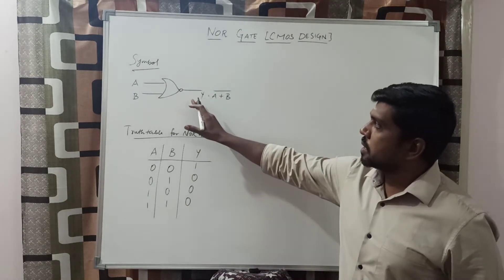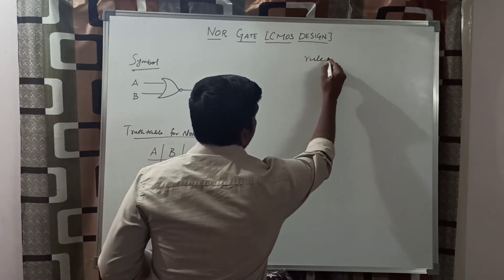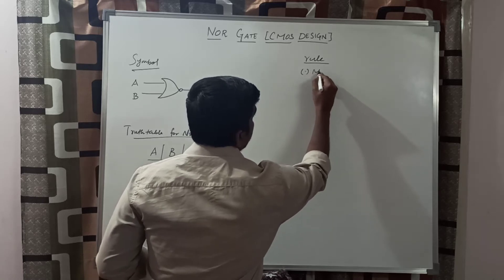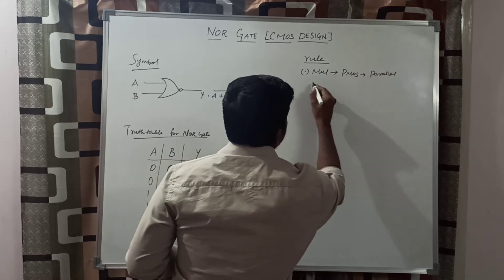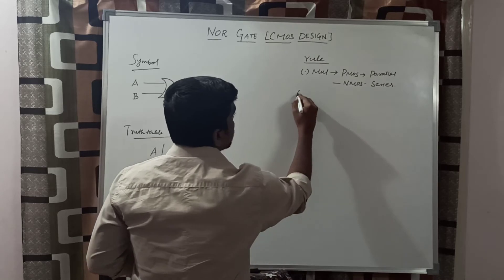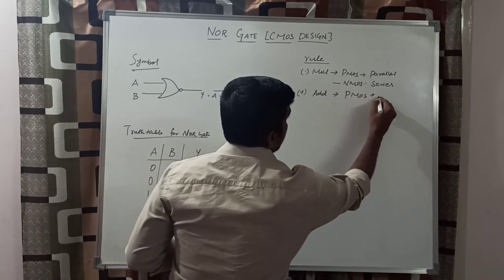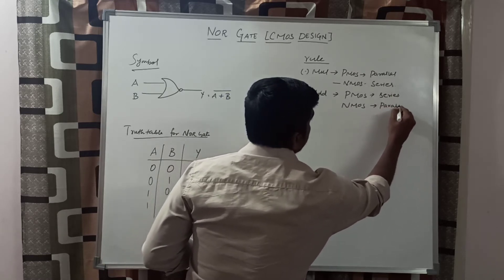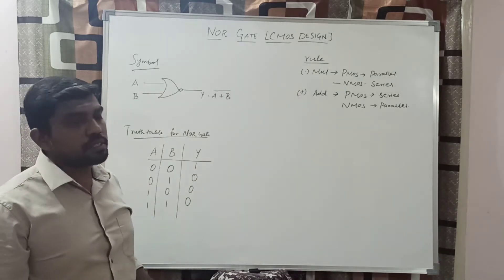Now you are transforming the logical design into CMOS logic. Before converting to CMOS logic, first remember the rules. For a product or multiplication operation, PMOS transistors are connected in parallel and NMOS transistors are connected in series. Suppose the operation is addition — in this case, PMOS transistors are connected in series and NMOS transistors are connected in parallel. This is the general rule of converting logical design into transistor level.